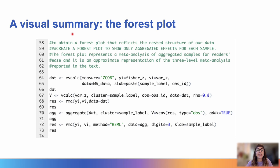So, to obtain a forest plot that reflects the nested structure of our data, we can create a forest plot that shows only aggregated effects for each sample, and this is just an approximate representation of the three-level meta-analysis. This is the bit of code that we need to do that, and I won't explain this in details, but in any case, we are basically running a new meta-analysis of aggregated effects.